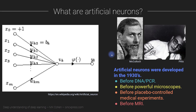This model was developed almost a hundred years ago — before we knew about DNA, before we had powerful microscopes, before the placebo effect had even been discovered, before MRI machines. My point is: these guys did incredible work, but we have learned so much about biology and neuroscience in the past hundred years that it just doesn't make sense to call their invention an 'artificial neuron' based on what we now know about neuroscience and biology as a scientific discipline.